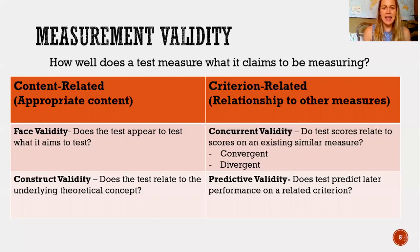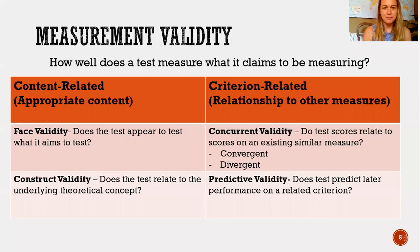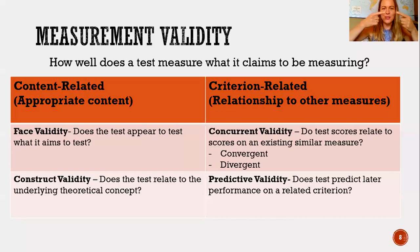Divergent validity says that if IQtest.com is actually measuring intelligence, you would predict there'd be no relationship — just a cloud of scatter in the scatter plot — between your scores on that test and some other test that has nothing to do with intelligence.